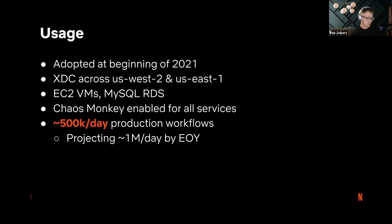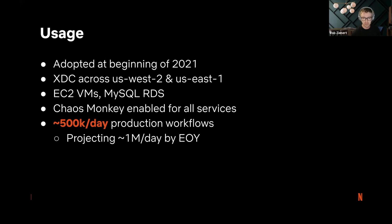Inside of Netflix, we adopted Temporal at the beginning of this year. We are deployed into two different regions in three different environments: test, staging, and prod — in US-West-2 and US-East-1 — and we use Temporal's XTC replication. We deploy straight onto EC2 VMs and use MySQL RDS. We'd prefer to use Cassandra, but due to some internal constraints we can't depend on other teams' software because we are a Tier 0 service. We have Chaos Monkey enabled for all the different services, so throughout the day it will be randomly terminating the matching service, the history service, and all that — our way of ensuring that Temporal is sound given various failure scenarios.